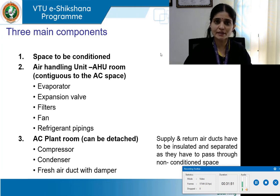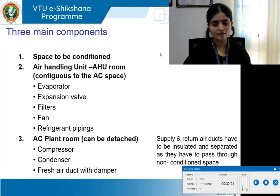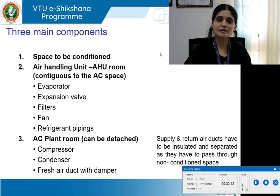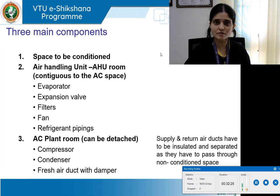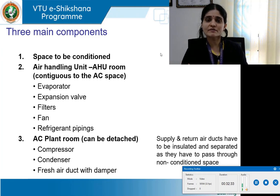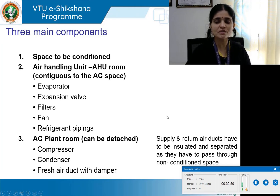The supply and return air ducts running in the plenum space must be insulated because they pass through non-conditioned space. For example, the supply air duct carries cooled air — say at 17 degrees — and if it passes through the warmer plenum space without insulation, the temperature may rise before reaching the intended space. Hence insulating these ducts is essential for better efficiency.